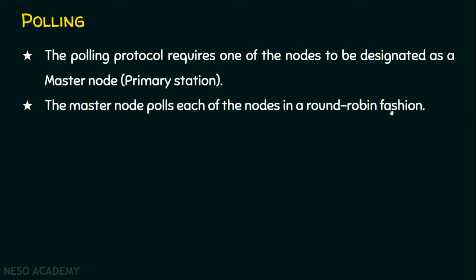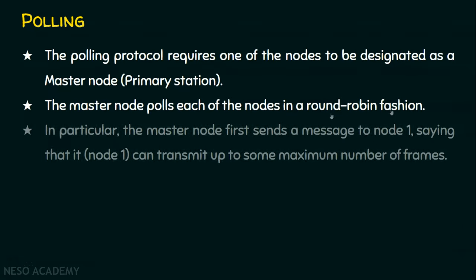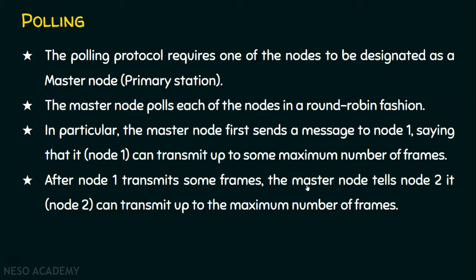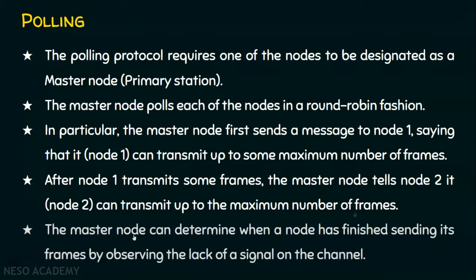The master node will give chance for every node to transmit their data. In particular, the master node first sends a message to node 1, saying that node 1 can transmit up to some maximum number of frames. So it is now giving turn to node 1 to send some number of frames. After node 1 transmits some frames, the master now tells node 2 to transmit up to some maximum number of frames. The master node can determine when a node has finished sending its frames by observing the lack of a signal on the channel.